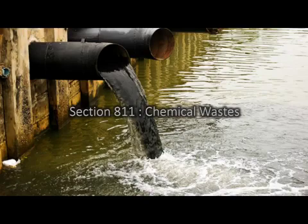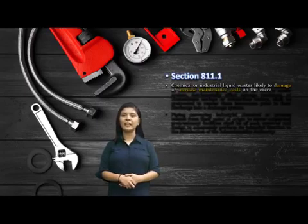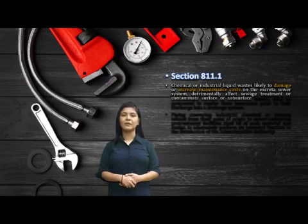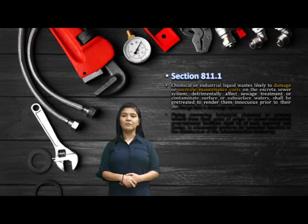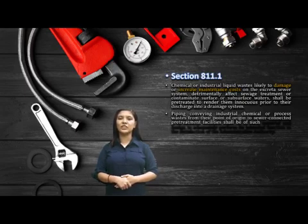Let's proceed to Section 811, Chemical Waste. This section is very important; it has eight subsections. As we know, chemicals have more hazardous characteristics and need to be separated and disposed of properly. Section 811.1: Commercial or industrial liquid waste likely to damage or increase maintenance costs, or that may affect sewage treatment, or contaminate surface or subsurface water, shall be treated to render them innocuous prior to their discharge into the drainage system.